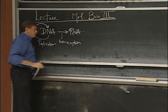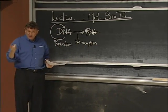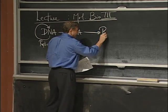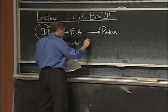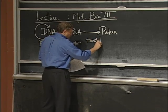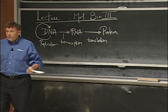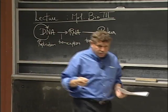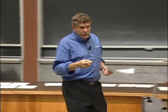We call it transcription because it's such a direct copying of letter to letter. RNA goes to protein by a process of translation, because translation is the kind of word we would use between two different languages — and they are two different languages: the language of nucleotides and the language of amino acids.